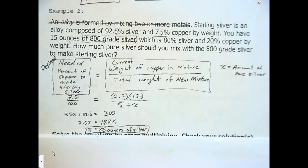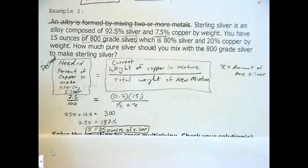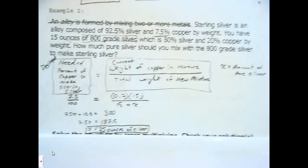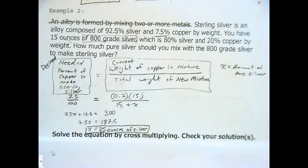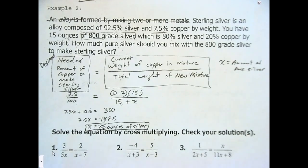Now solve for x. Cross multiplying: 7.5 × (15 + x) gives 112.5 + 7.5x, and 100 × 3 = 300. We solve and get x = 25 ounces of pure silver. How many got it?